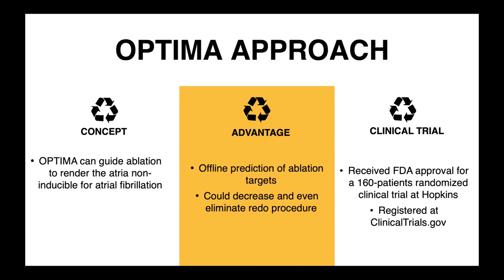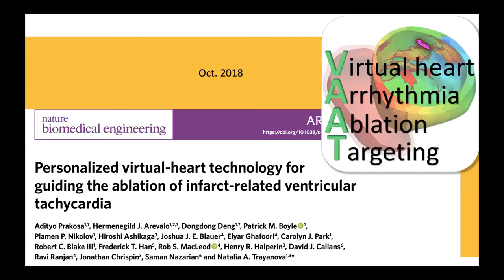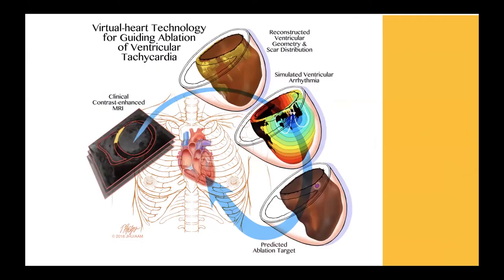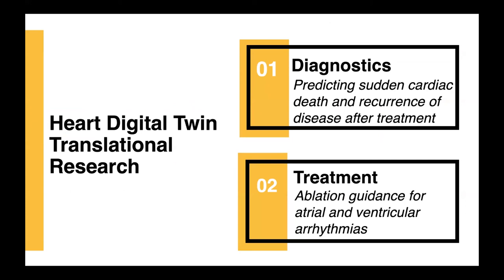We have similar digital twin approaches for other types of arrhythmias like ventricular arrhythmias. Published a year earlier, the approach is very similar: use the image, reconstruct the model, predict where to ablate, and then it is done in the clinic. This works for ventricular arrhythmias as well.